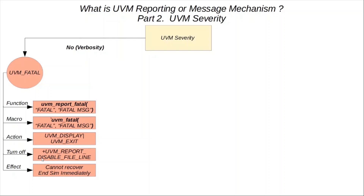To disable the printing of file name and line number details, you may use the `+UVM_REPORT_DISABLE_FILE_LINE` command line argument, which turns off that output. UVM_FATAL represents an unrecoverable situation, so the simulation must stop at that point. The next message type is UVM_ERROR, which also has no verbosity requirement.